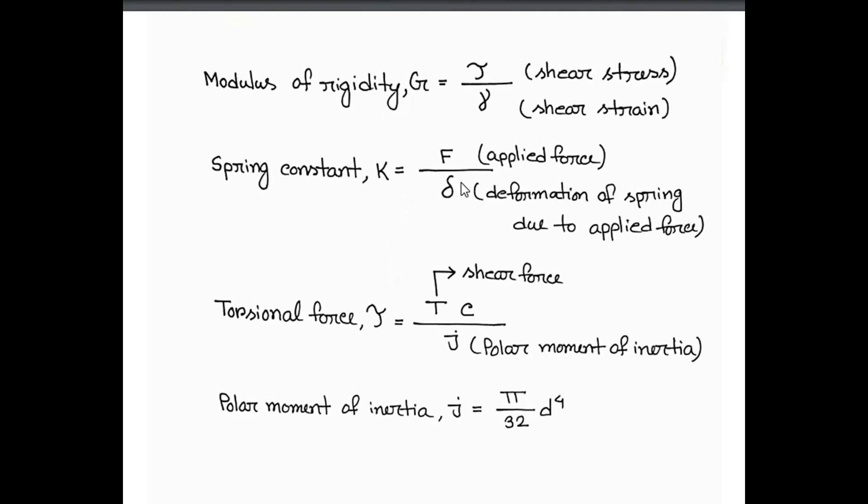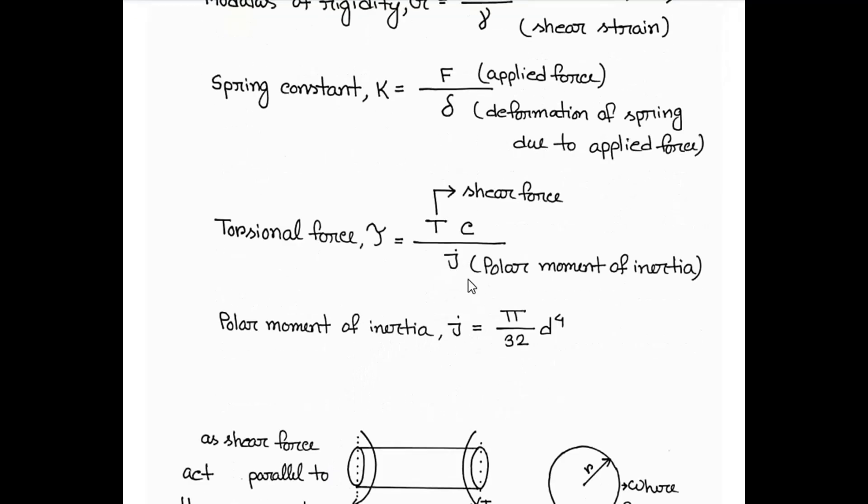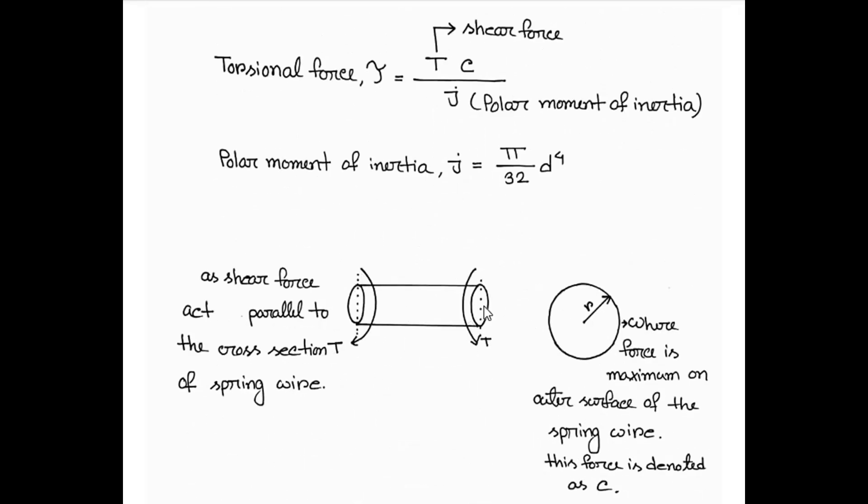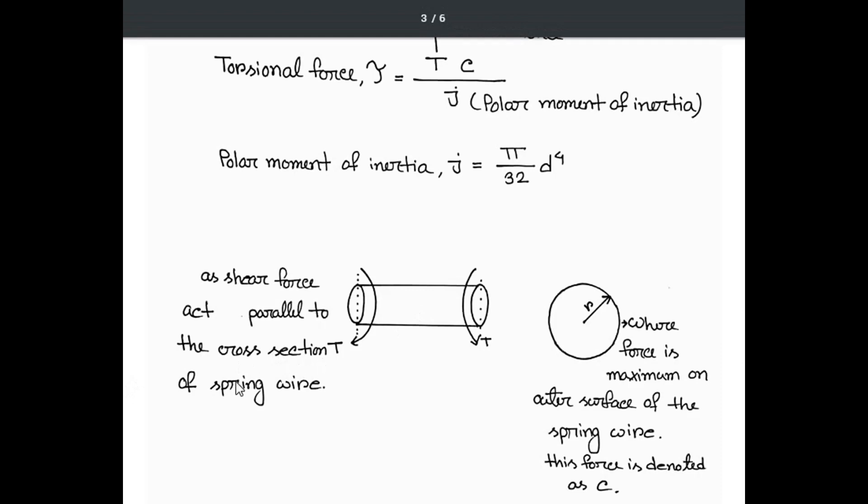The torsion force equals torque, which is the shear force times C divided by J. We'll talk about C later. J is the polar moment of inertia, which equals pi by 32 times small d to the power 4. Here we can see a figure of the wire of the spring and what torque is applied in this direction.